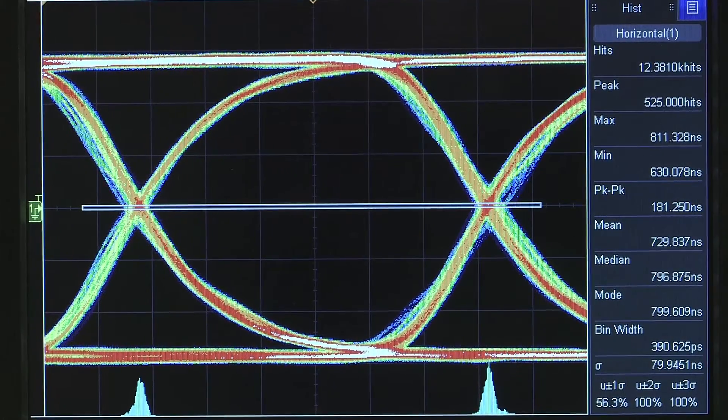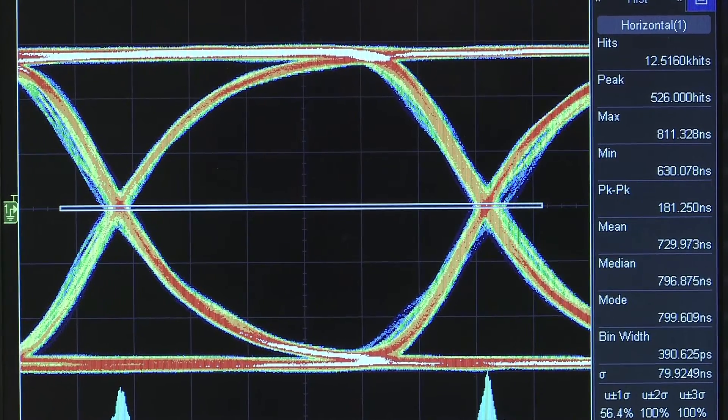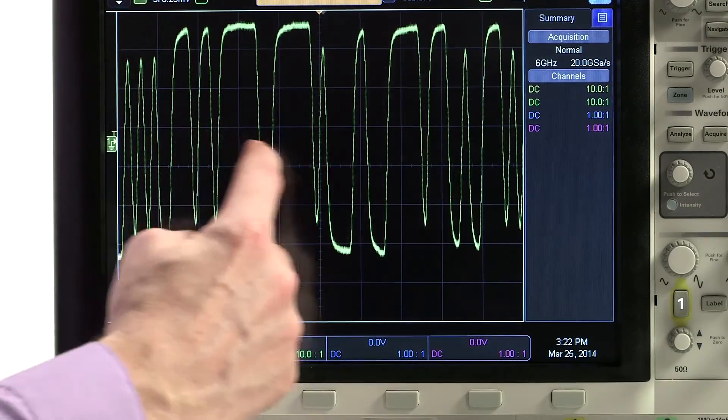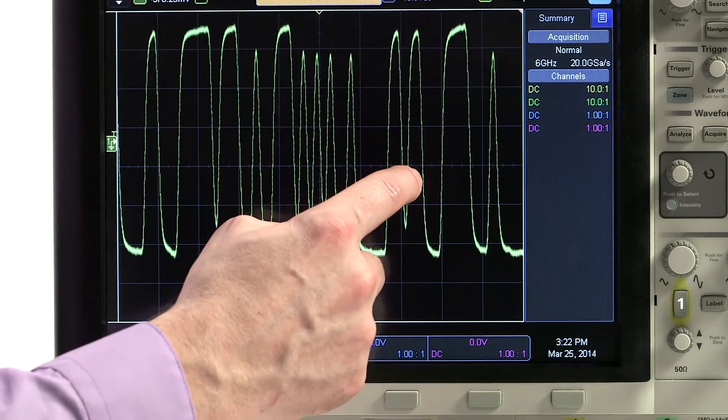The 6000x offers unmatched signal visualization as well. Total visualization starts with an industry-leading 12.1 inch capacitive multi-touch screen with gesture support. If you know how to pinch, swipe, and zoom on a tablet, you know how to use it.